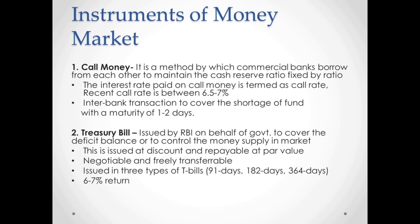Treasury bills are issued at a discount and repayable at par value — for example, you might pay 450 for a bill with a face value of 500, and receive 500 at maturity. For this reason, they are also referred to as zero coupon bonds. They are negotiable and freely transferable — you can sell or redeem them and get your money. Treasury bills are generally issued in three types: 91 days, 182 days, and 364 days, indicating the maturity period. The return from T-bills is about 6 to 7 percent.